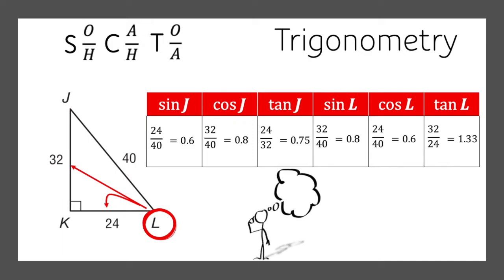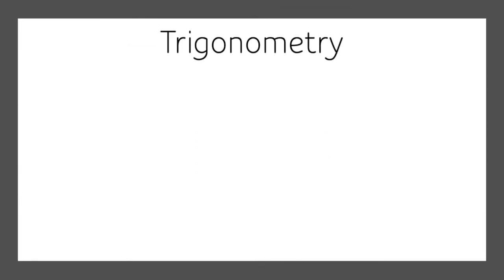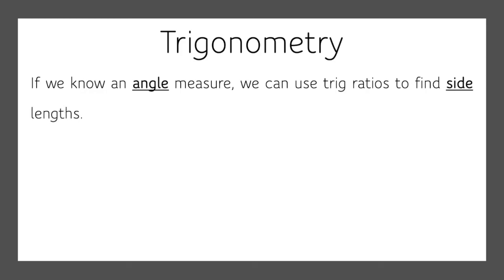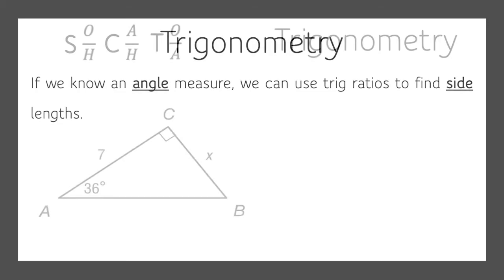So the next question is, why? Why are we doing this? There are so many reasons why we do this. But one reason is that if we know an angle measure, we can use these trig ratios to find the side lengths.